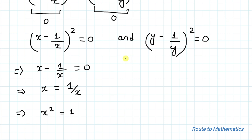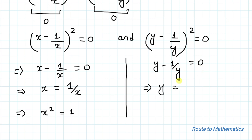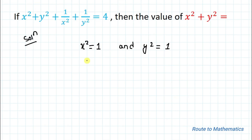Similarly, y - 1/y = 0, which implies y = 1/y. Cross multiplying gives y² = 1. So we have x² = 1 and y² = 1. We have now found the values of x² and y².